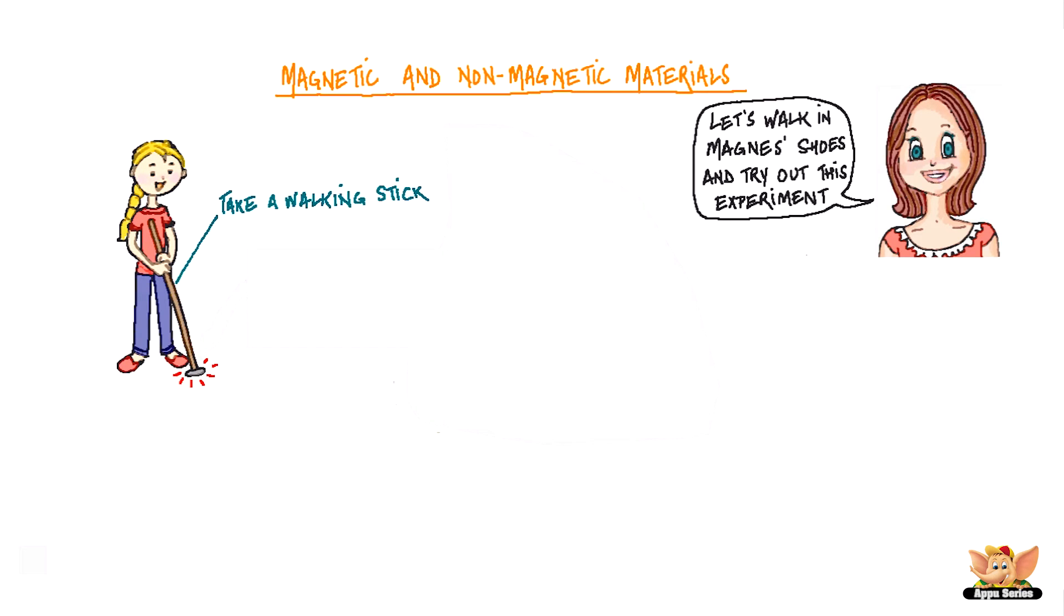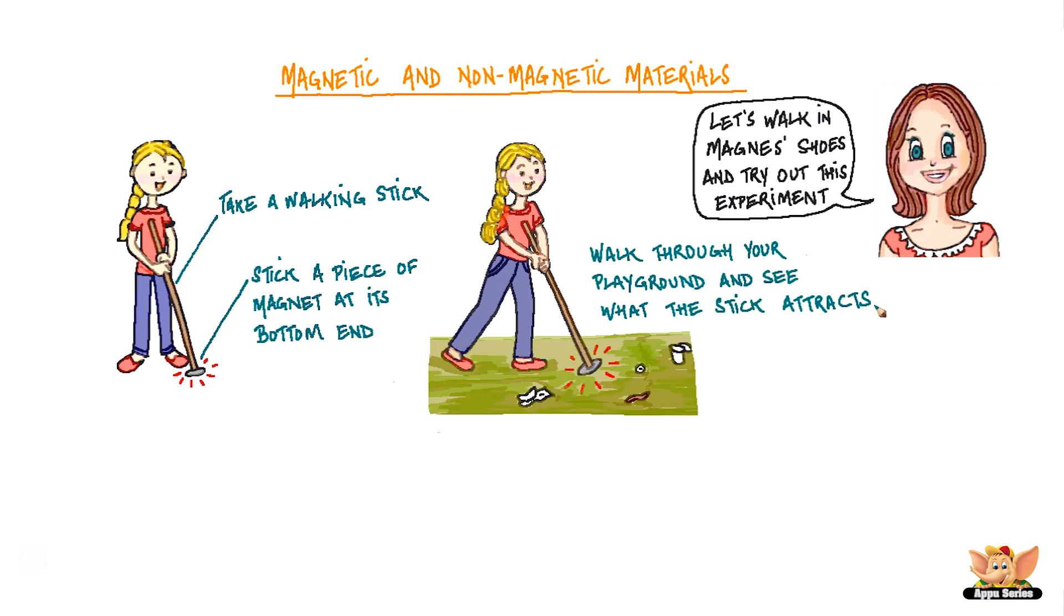Take a walking stick or a hockey bat and stick a piece of magnet at its bottom end. Now, walk through your playground or garden and see what the stick attracts.